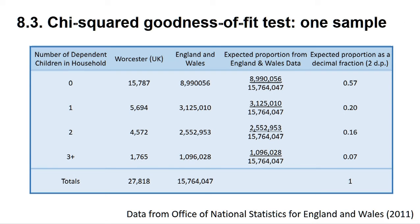For example, in column 2 of this table we see the breakdown of the number of households in Worcester City in terms of the number of dependent children within them. City councils often need such data to plan expenditure, and one question is whether Worcester is typical of England and Wales in general. The figures from England and Wales are given in column 3, and in column 4 we express this as a fraction giving the proportion of cases in each group. In column 5 we express this fraction as a decimal. These are our expected proportions.